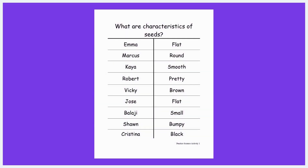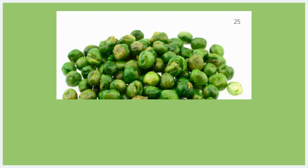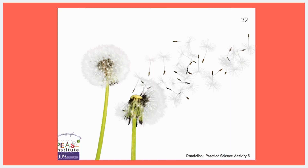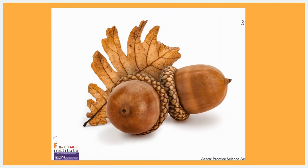For this activity, you will need the following materials: the documentation panel titled Characteristics of Seeds from Activity 1, photographs of Spinach Seeds, Carrot Seeds, Dried Peas, Tomato Seeds, Dandelion, Acorn, Sweetgum, and Samara Fruit.